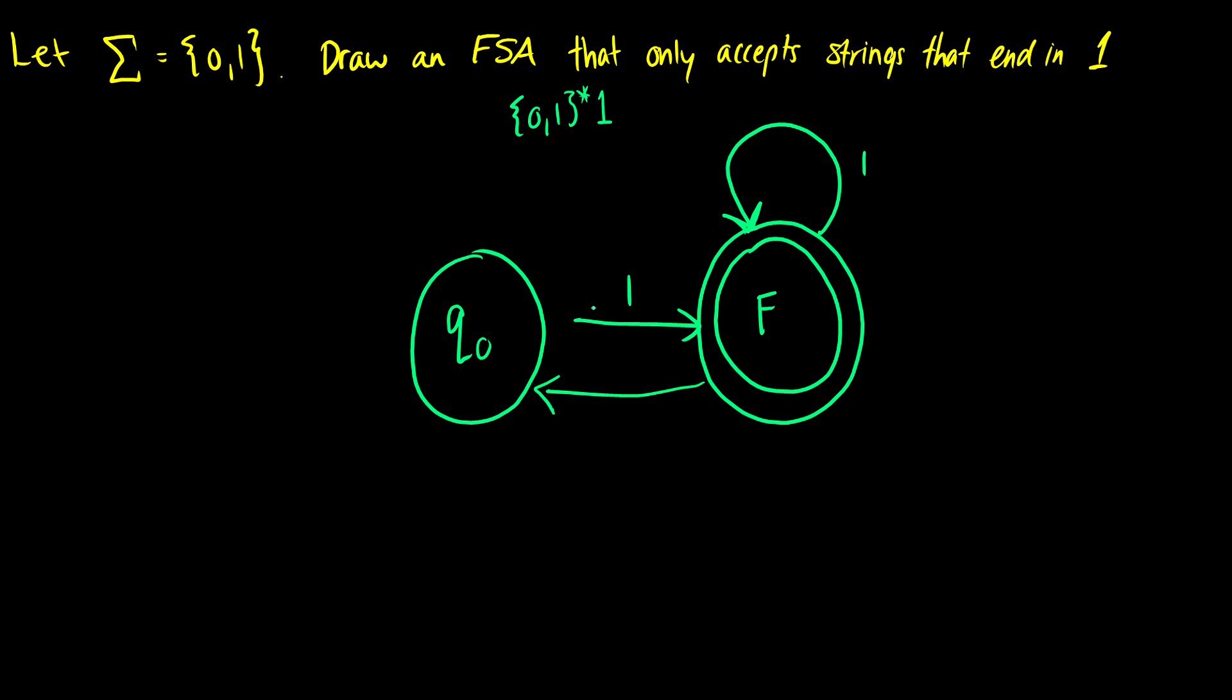So we're going to call this q0. So if we take a look at this, again this is our start state. If we start at q0 and we input a 1, we're in the final state and we're good.